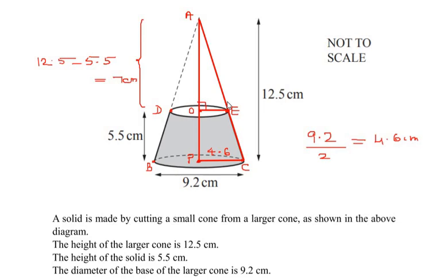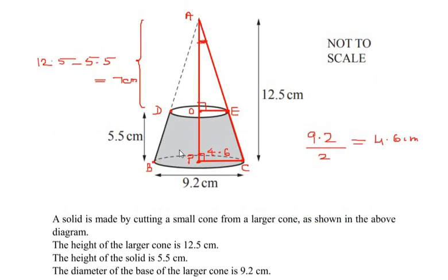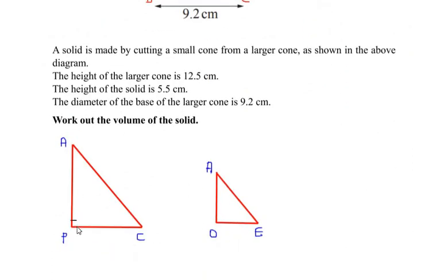Angle AOE is 90 degrees and angle APC is also 90 degrees. In triangle AOE and triangle APC, angle A is common to both. By the AA (Angle-Angle) criterion, triangle AOE is similar to triangle APC. Since two angles are equal in both triangles, the third angle is also equal, confirming that both triangles are similar.